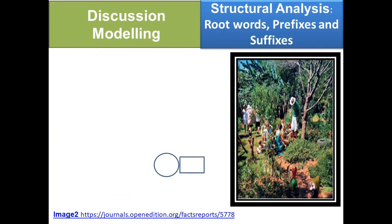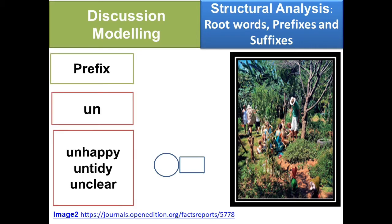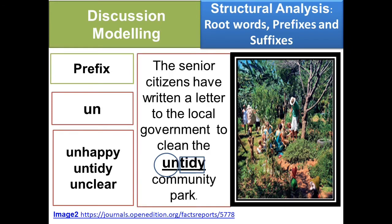Let's have the second prefix, 'un.' These are the example words with prefix un: unhappy, untidy, unclear. Example sentence: The senior citizens have written a letter to the local government to clean the untidy community park. As you can see, the underlined word is untidy. The root word is tidy, and the prefix 'un' means not. The word untidy means not arranged properly. It is the opposite of the word tidy and orderly.